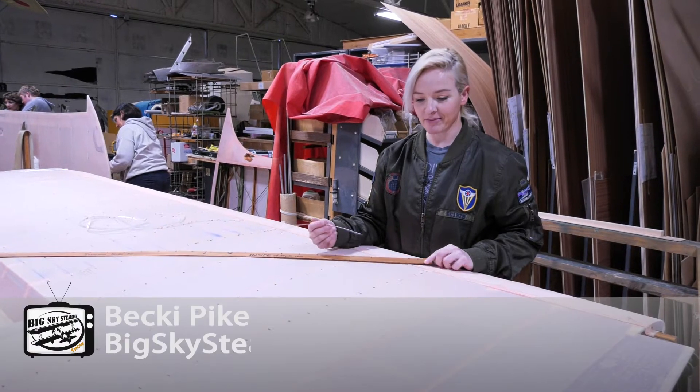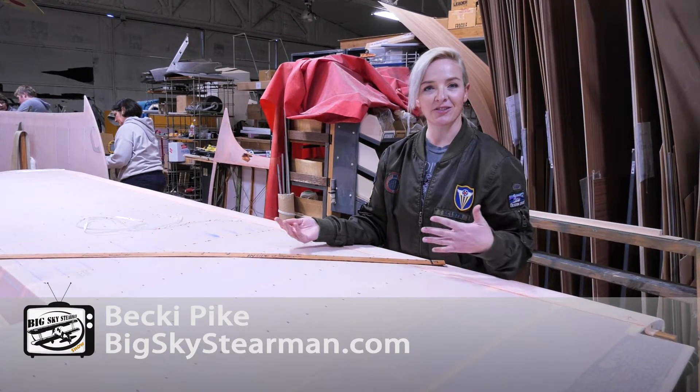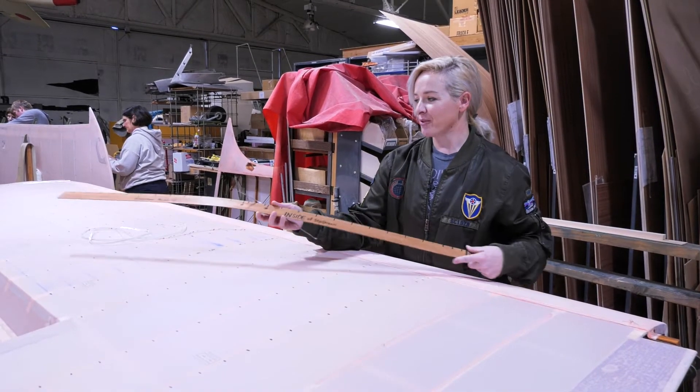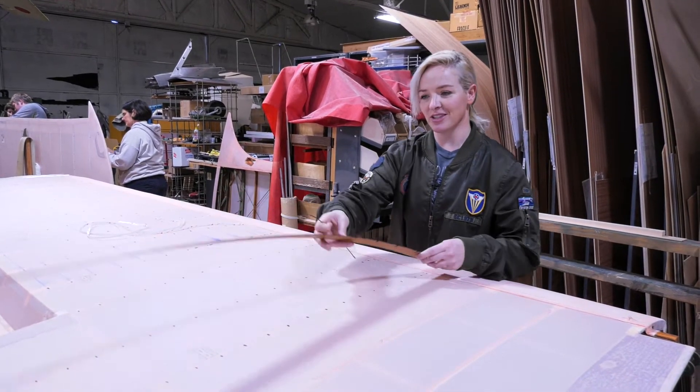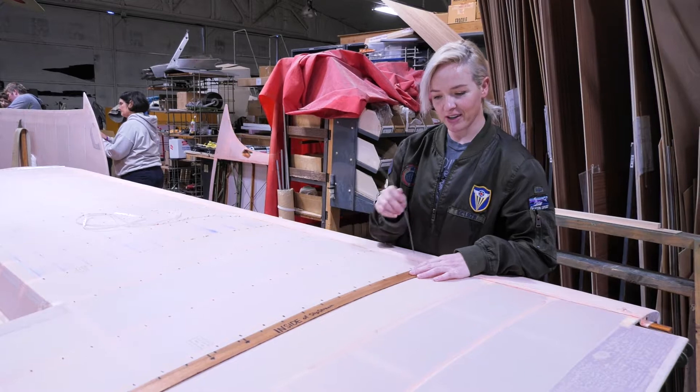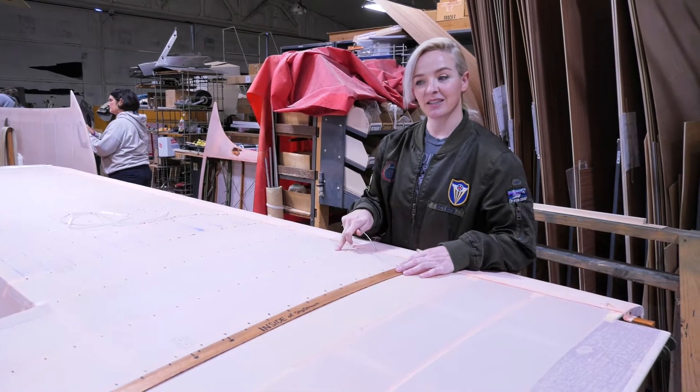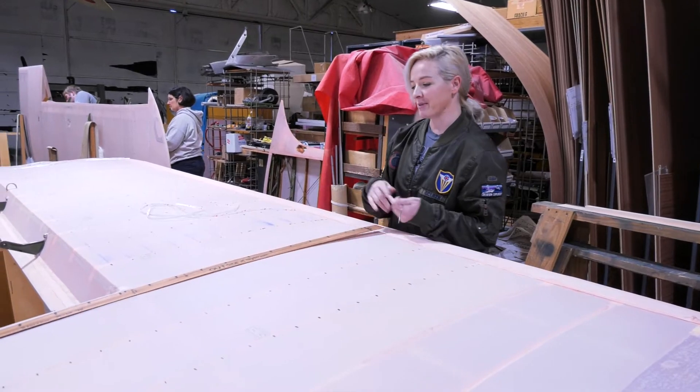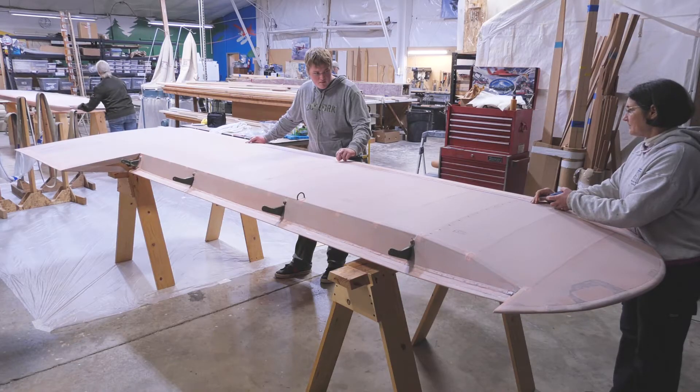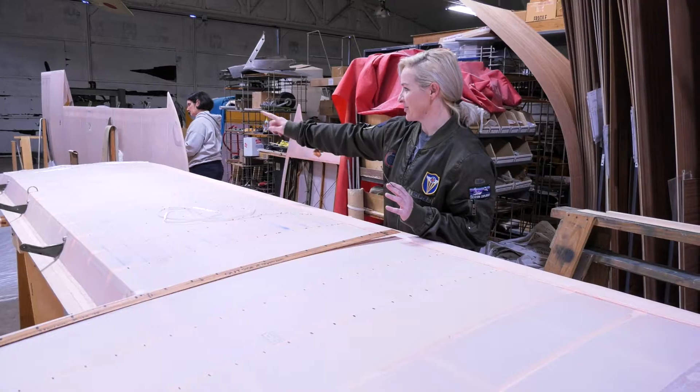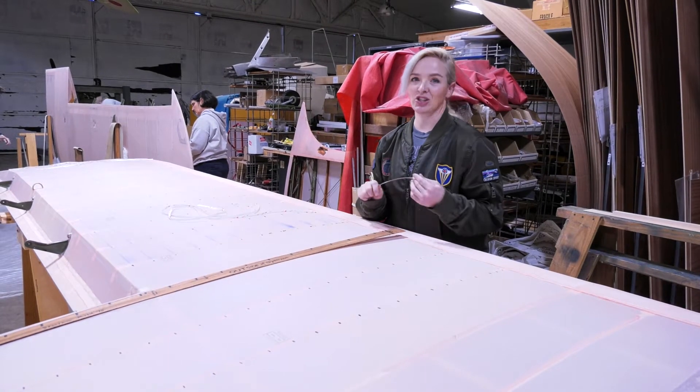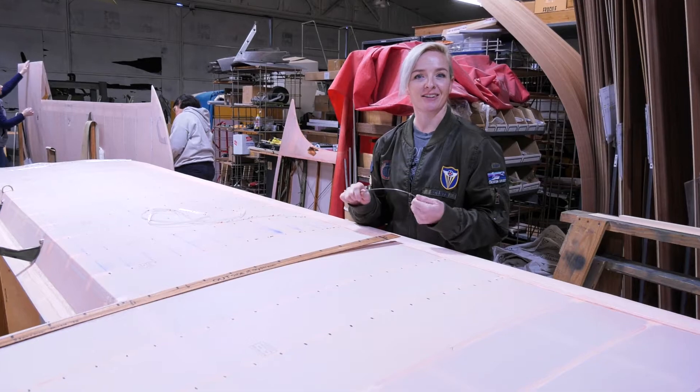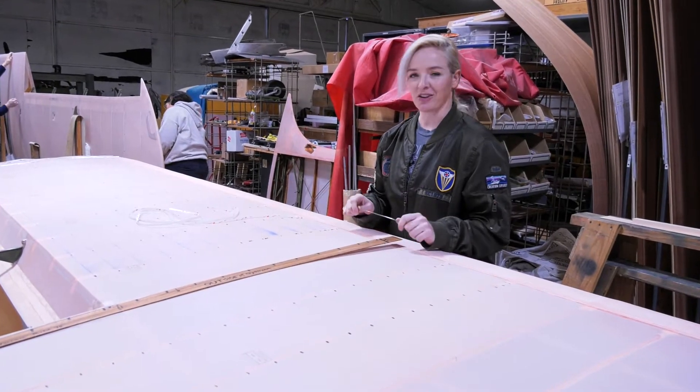For rib stitch spacing, you'll have to read the book and see what your special plane requires. For the Stearman, we've created a pattern here to mark the ribs that are inside and outside the slipstream. Then we use a chalk line to connect the marks so they all look straight, because you can see this from the outside after the paint is on. It's nice to have them all straight and looking good.